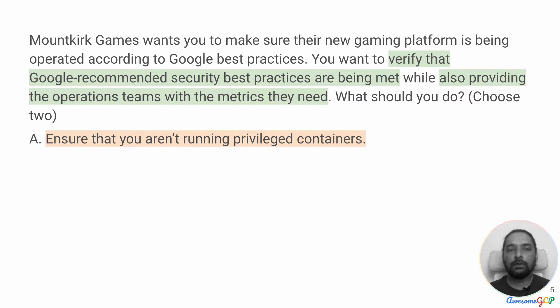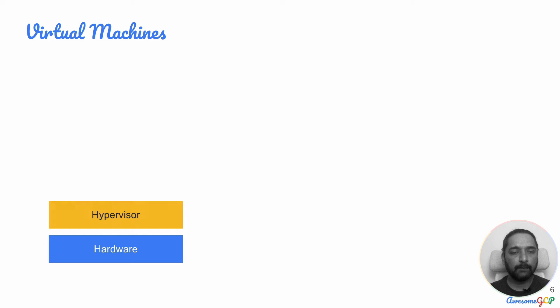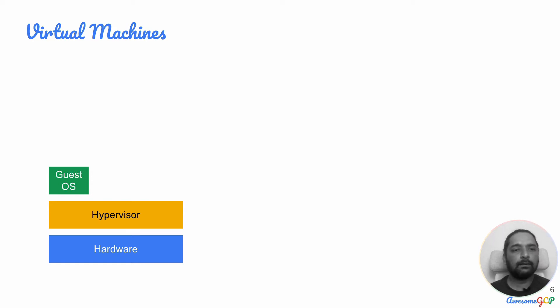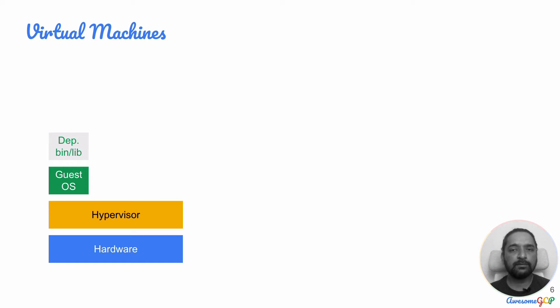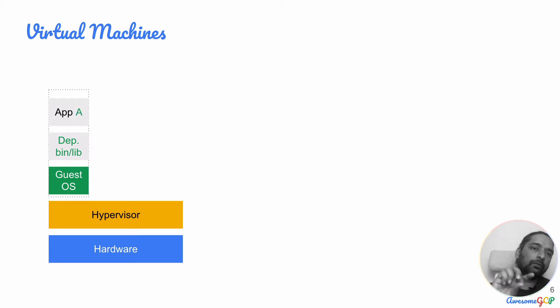The first option recommends that you ensure that you aren't running privileged containers. To understand this, let's look at what containers are and what privileged containers specifically are. When you work with bare-metal machines, you essentially get a complete machine with one operating system on which you can do whatever you want. On the cloud, what you usually get is a set of hardware separated into virtual machines. There is base hardware, and on top of that a technology called hypervisor which allows you to install multiple guest operating systems.